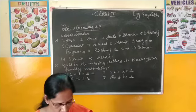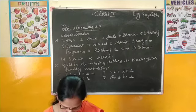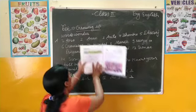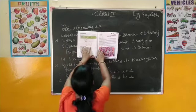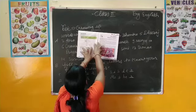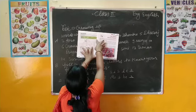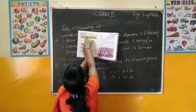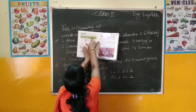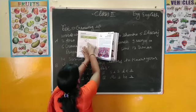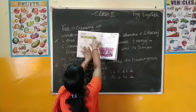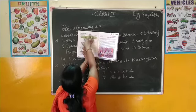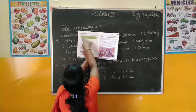Next exercise है - Next page turn, page number 8। इस पे हम देखेंगे - यह picture दी हुई है elephant की। सबसे पहले - 'Look at the following picture and write a few lines about it' - आप इस तस्वीर को देखिए, इसके बारे में कुछ lines लिखिए। 'You may use the words from the box' - आपके द्वारा box में इन शब्दों का प्रयोग करना है।